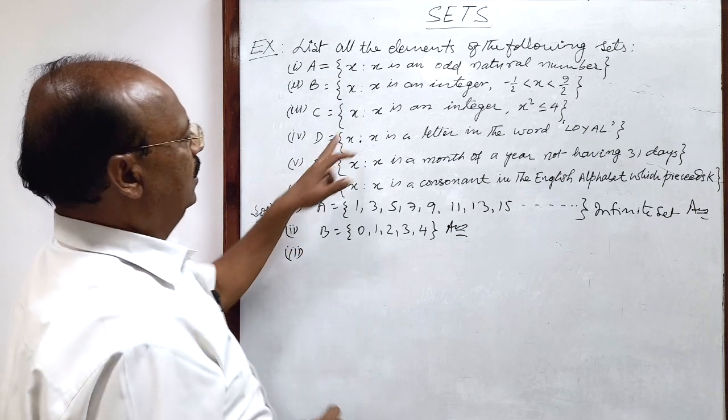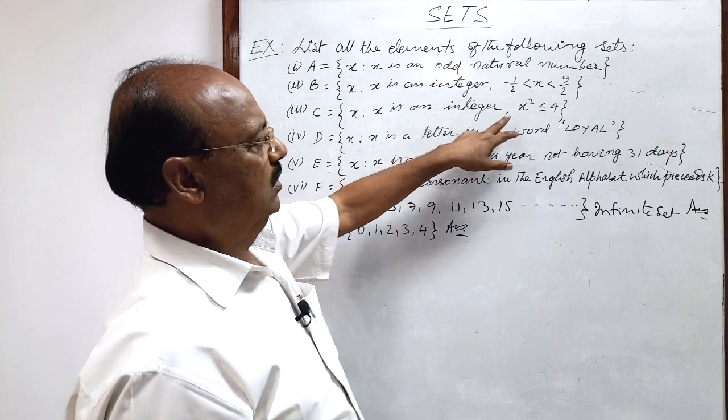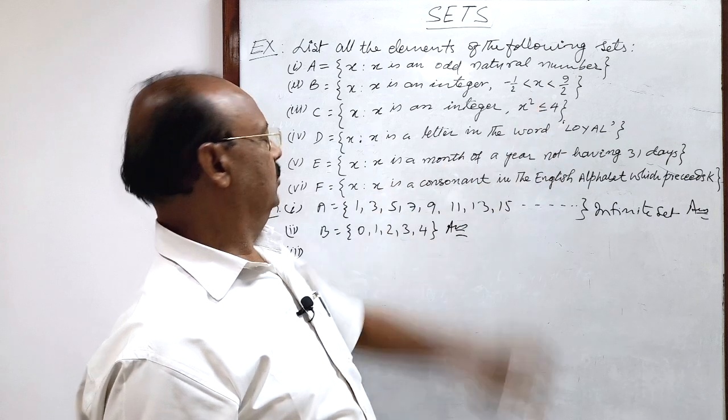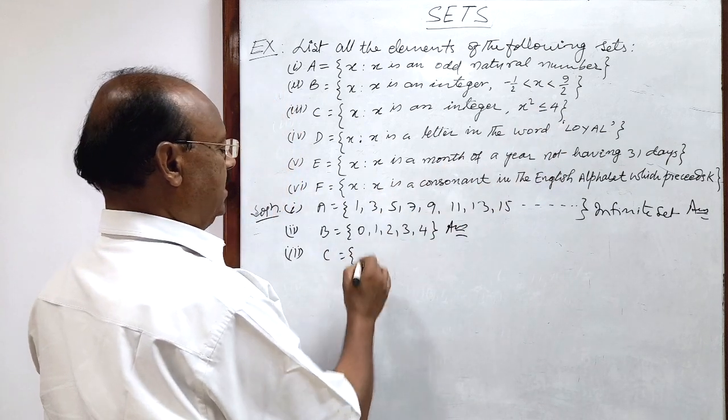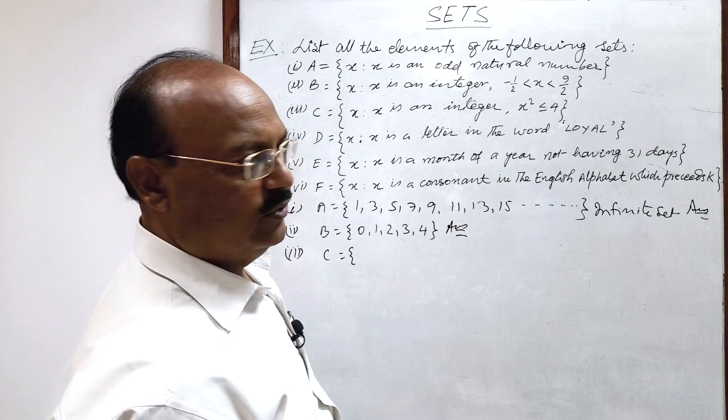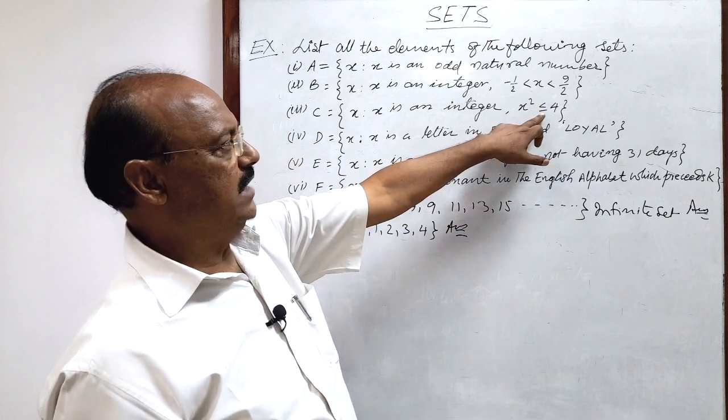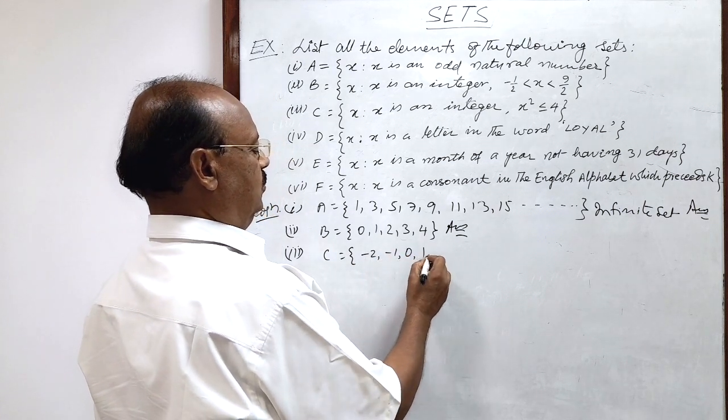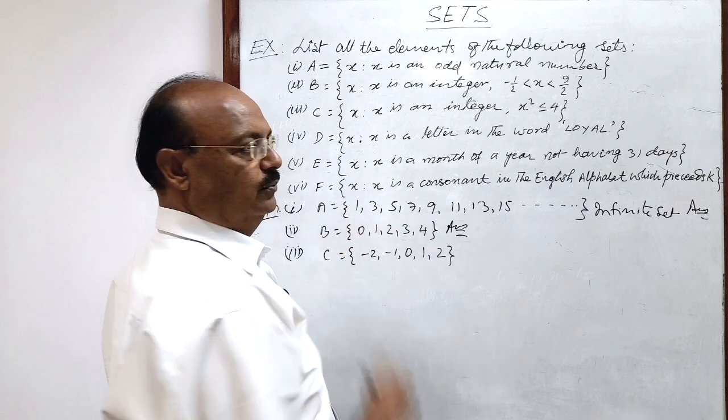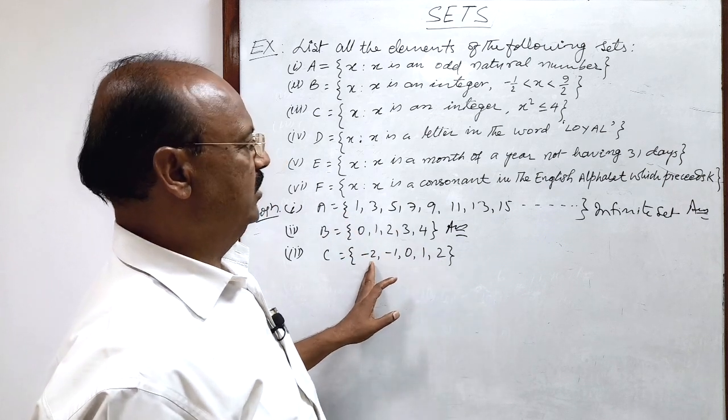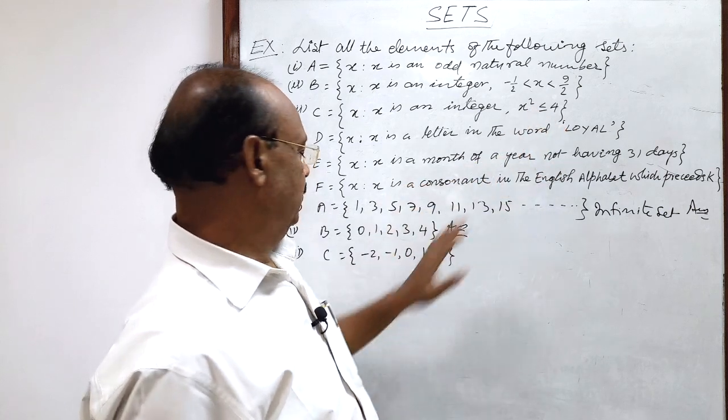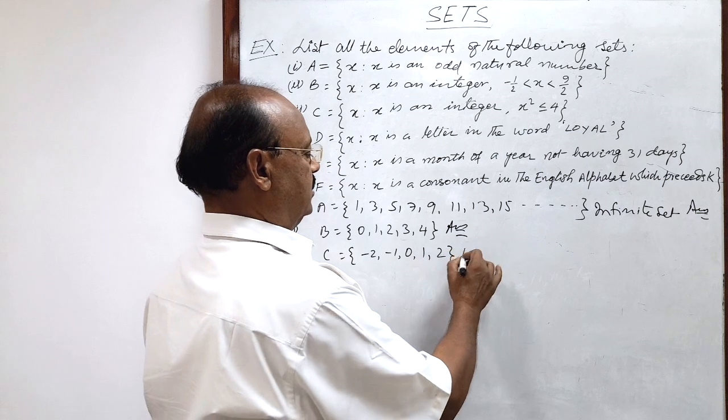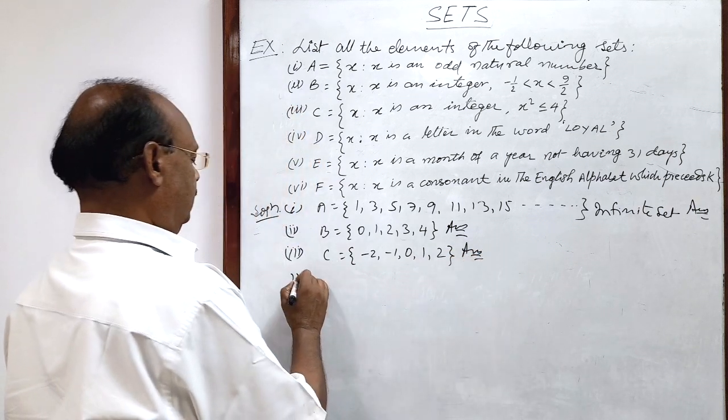And third part, x such that x is an integer, so that x square is less than or equal to 4. So here integers whose square is less than or equal to 4, equality sign is also here. So these integers will be minus 2, minus 1, 0, 1 and 2. Square of 2 or square of minus 2 is 4, so equality sign is there. So we are taking minus 2 and plus 2 also. So these are the integers answer.